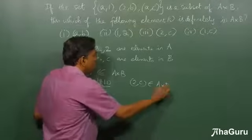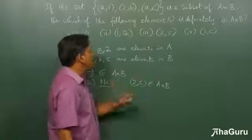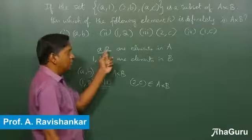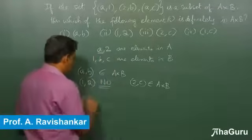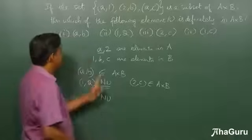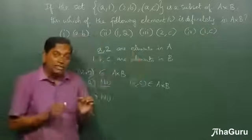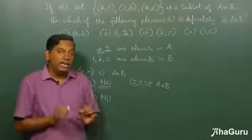What about (1,c)? Again, 1 is not guaranteed. c is there but 1 is not guaranteed to be in A, so that is also no. So we can say that this one and this one are definitely part of A×B.